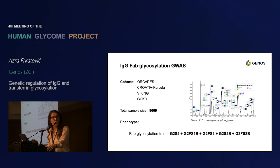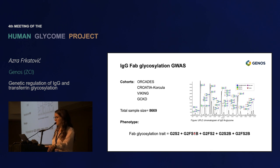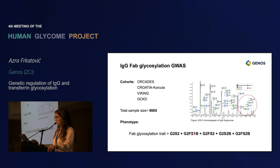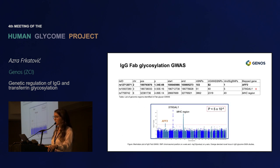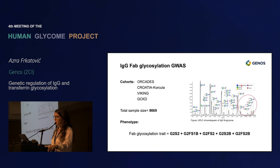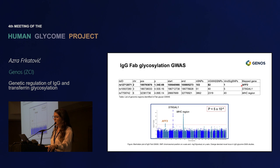This is an additional GWAS done separately from the previously presented glycosylation studies, focused on FAB glycosylation, which could only be analyzed in cohorts that had UPLC data available. We had around 8,700 samples, and the FAB glycosylation trait was calculated as the sum of specific structures. What we see, besides the expected association with ST6GAL1, which is a sialic acid transferase enzyme — and indeed all of these structures contain sialic acid — we also see associations with the MHC region on chromosome 6.